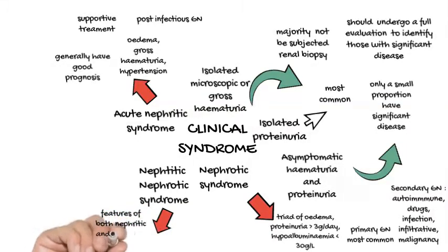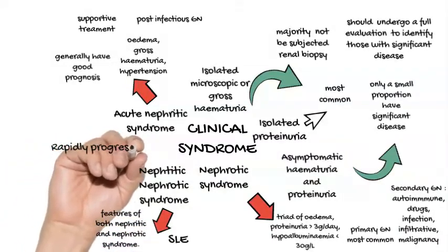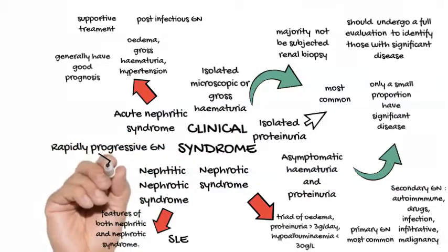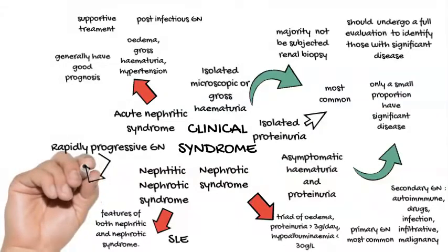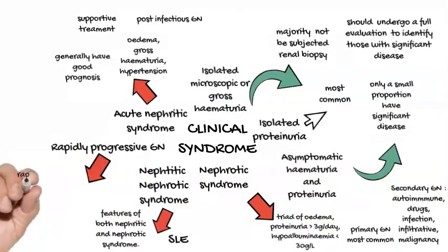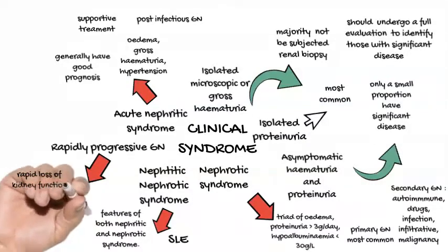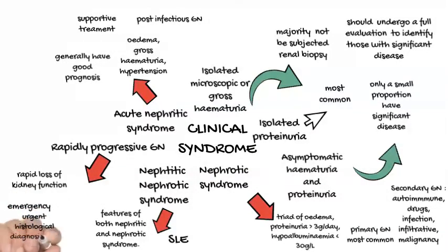Rapidly progressive glomerulonephritis. This is a term applied for acute nephritis that results in rapid loss of kidney function taking place over a period of weeks to months. Rapidly progressive glomerulonephritis is a medical emergency, demanding urgent histological diagnosis and treatment to prevent renal failure. Goodpasture's syndrome and Wegener's granulomatosis are some conditions associated with this very severe form of glomerular inflammation.